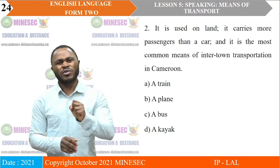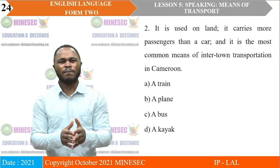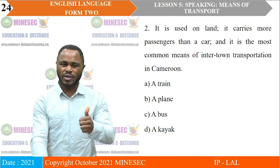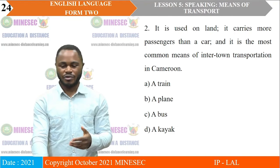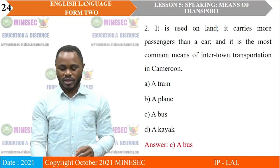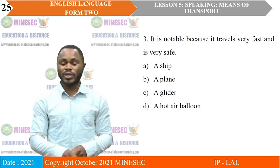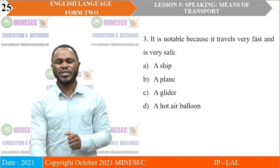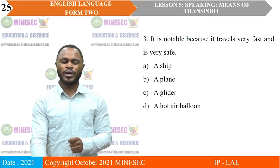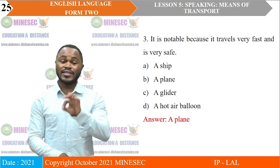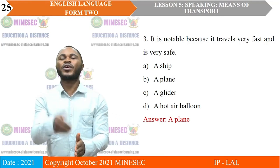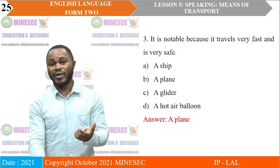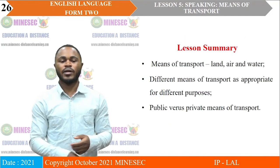Question two: which of these statements apply? It is used on land, it carries more passengers than a car, and it is the most common means of inter-town transportation in Cameroon. Are we talking about trains, planes, buses, or kayaks? In Cameroon, we are definitely talking about a bus — because although trains and planes are used for inter-town transportation, they are not as common as buses. Question three: it travels very fast and is very safe — is it a ship, a plane, a glider, or a hot air balloon? Obviously, a plane goes fastest and is safest. Safety is determined by the frequency of accidents, and planes have the least number of accidents, although when they do have accidents they are pretty disastrous.